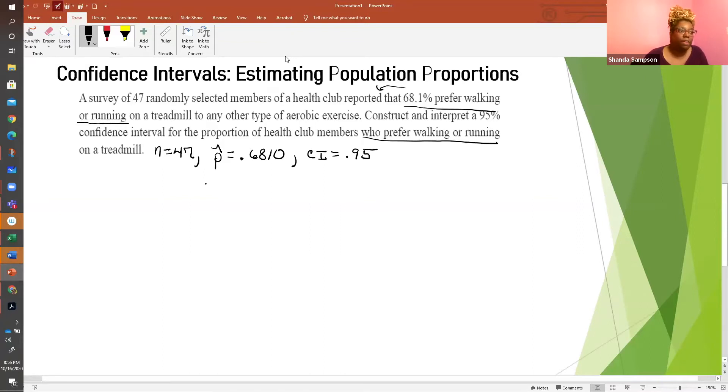The confidence interval for this is P hat minus E is less than P is less than P hat plus E. We need to know what E is. E is equal to Z alpha over 2 times the square root of P hat times 1 minus P hat all over N. So the good thing about population proportion is that we're using our Z chart again. So we're back to Z. The only time we have to worry about T's and Z's is if we're doing mean. Population proportion is always a Z.